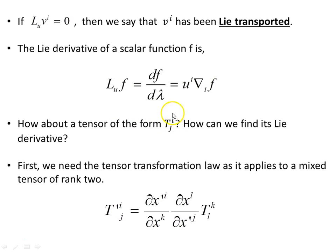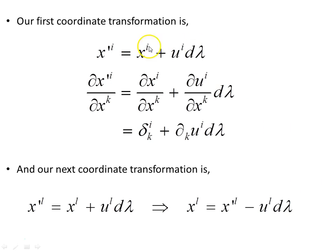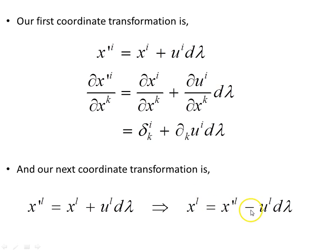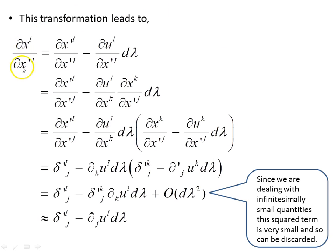What about a mixed tensor of rank 2? To find its Lie derivative, we first need the tensor transformation law for a mixed tensor of rank 2. Our first coordinate transformation is x prime i equals x i plus u i d lambda; dividing through by dx k, with independent coordinates, the Kronecker delta applies: delta i k plus the derivative term. The second coordinate transformation — needed because it's a rank-2 tensor — is x prime equals x l plus u i d lambda, which we rearrange to express the unprimed coordinates in terms of the primed minus u i d lambda, giving us dx l dx prime j.